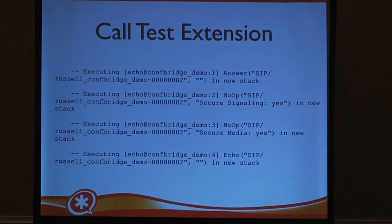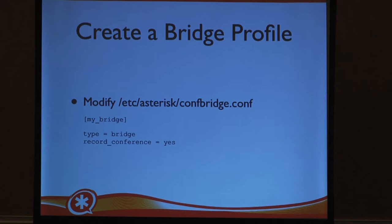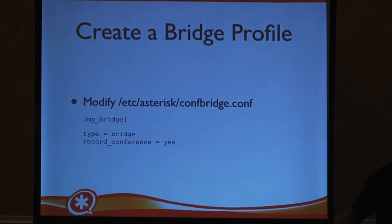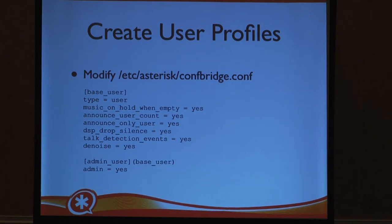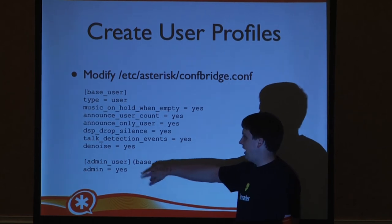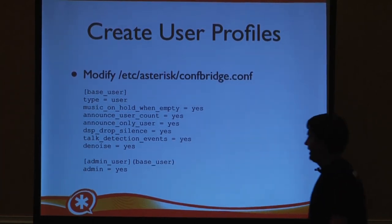Now we have to do the conferencing part. We jump over to the ConfBridge configuration file called confbridge.conf. The way you configure ConfBridge, you create profiles in there. The first thing we have to create is a bridge profile — I called it creatively 'my bridge' — and the only option I set is record conference equals yes. So anytime people call in to this conference, it automatically gets recorded. We have to create user profiles. I created two: there's a base user, and the second one is an administrator called admin user. The admin user inherits from base user and just adds admin equals yes.